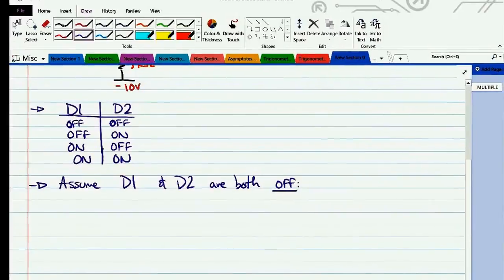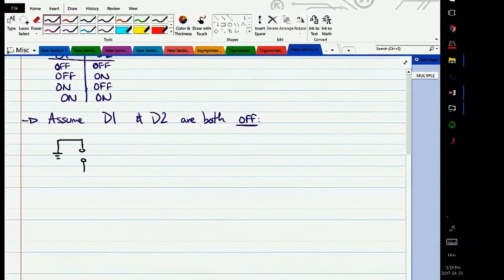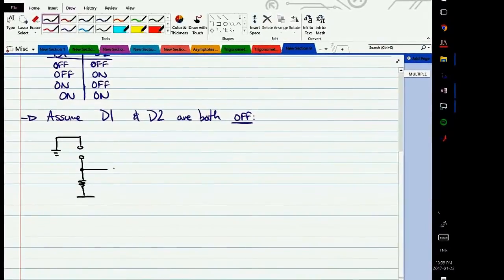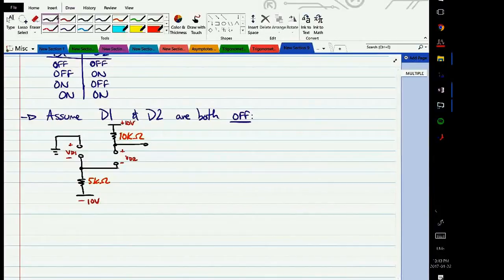So let's begin by assuming that the diodes D1 and D2 are both off. Obviously, our circuit is going to change a little bit. We still have this ground node, an open circuit where diode D1 was before, the resistor is still there, D2 will be replaced by an open circuit, we have our positive supply, and our 10K resistor. This is 10 kilo ohms, this is 5 kilo ohms, this voltage is plus 10 volts, this is minus 10 volts.